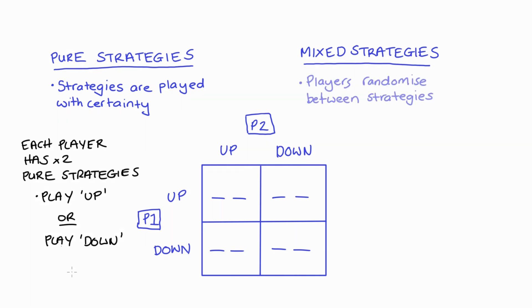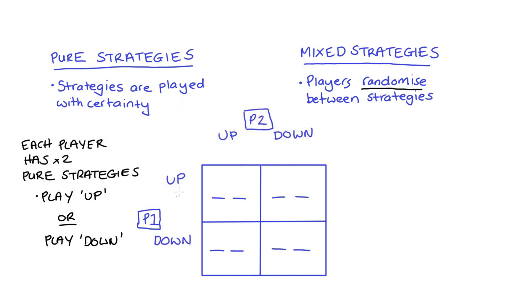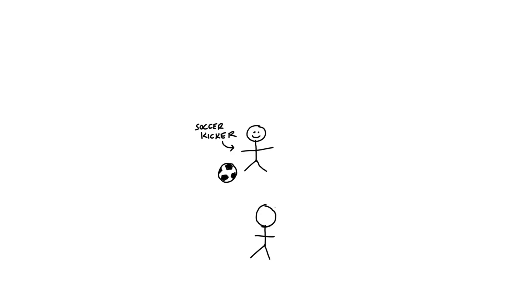When we start to allow for mixed strategies, we're going to allow our players to randomize between their possible pure strategies. For now we can take this to mean that there's going to be a probability attached to each of our players' possible pure strategies. In this case, player one plays up with probability r and down with probability one minus r, and player two plays up with probability q and down with probability one minus q. A really good question at this point is: why do we need to extend our theory of pure strategies to include mixed strategies?